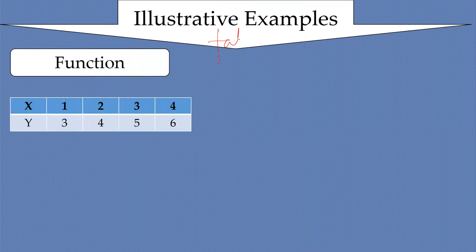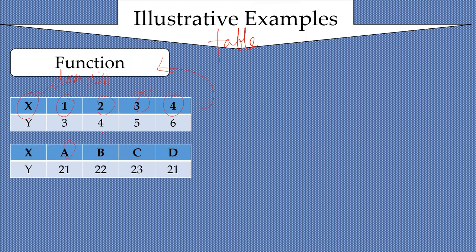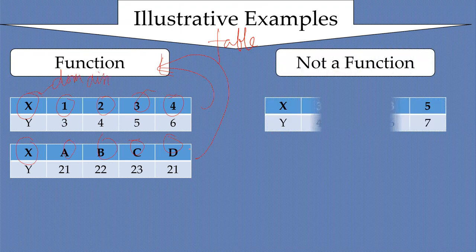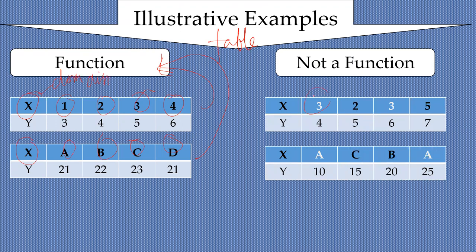The same manner applies for table representation — you just check your x or domain values. If any value is repeated, it is automatically not a function anymore. If no number is repeated in the domain, then it is a function. Another example with A, B, C, D in the domain — no repeated values, therefore a function. What makes it not a function? If there are x values being repeated — like 3 appearing twice or A appearing twice — those examples are not functions.